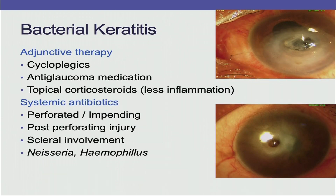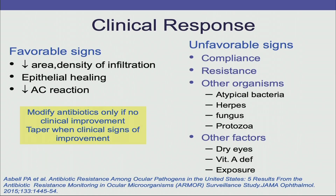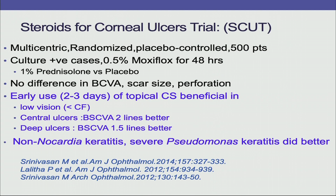Adjuvant therapy includes cycloplegics, anti-glaucoma medications, and topical steroids. Systemic antibiotics are preferred for cases of perforation, post-perforating injury, scleral involvement, and when the organism is Neisseria or Haemophilus. The SCUT trial (Steroids for Corneal Ulcer Trial) showed that early use of topical steroids is beneficial when vision is low, ulcers are central, or deep, and that non-Nocardia keratitis and severe Pseudomonas keratitis did better with topical steroids.